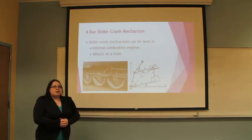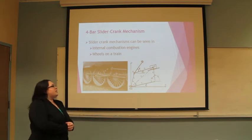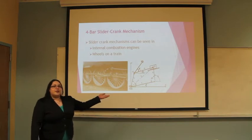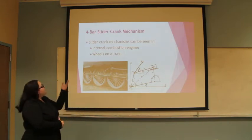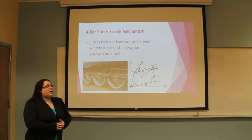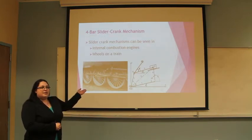To begin with, we're going to do the analysis of the four bar slider crank mechanism, which you can see on the right figure. An example of this mechanism can be seen in internal combustion engines as well as the wheels on a train pictured here on the bottom left.